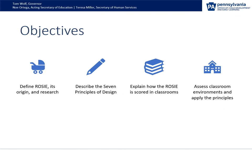Throughout our time, we will work through the following objectives: define ROSE, its origin, and the research behind it; describe the seven principles of design; and explain how scoring is conducted and use pictures to assess environments and apply the principles.